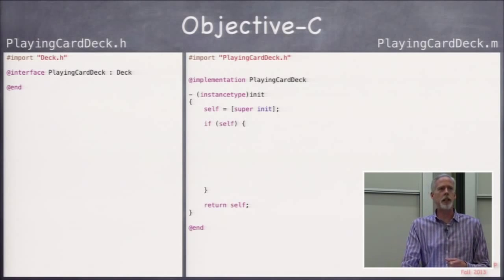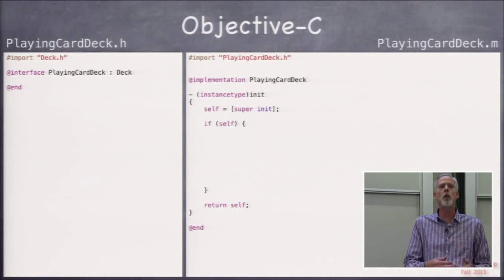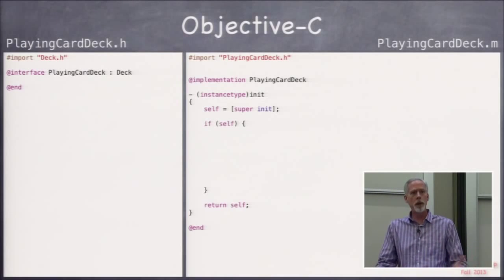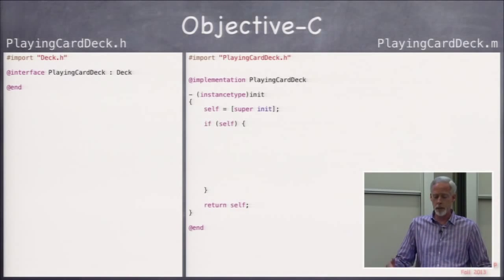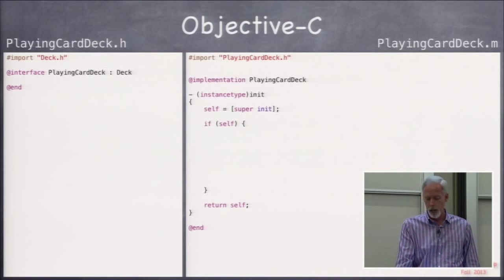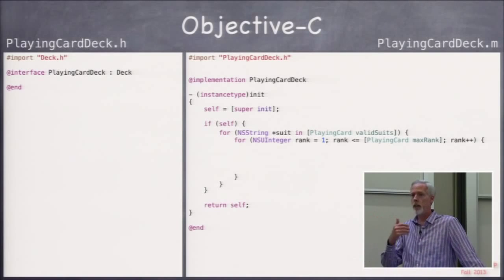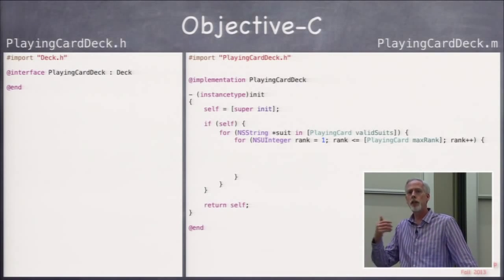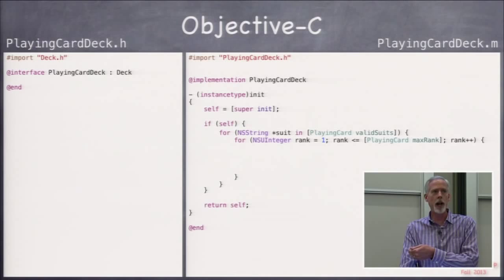So what does this init need to do? What do I need to do to have a well-formed, initialized playing card deck? Well, a playing card deck has 52 cards in it, one of each kind of card. King of clubs, three of diamonds, all, every one of the, 52 of them. So I just need to iterate through all the suits, and then iterate through all the ranks, and create a card, and add it to myself. So here's me iterating through the suits, iterating through the ranks, everyone cool with that?